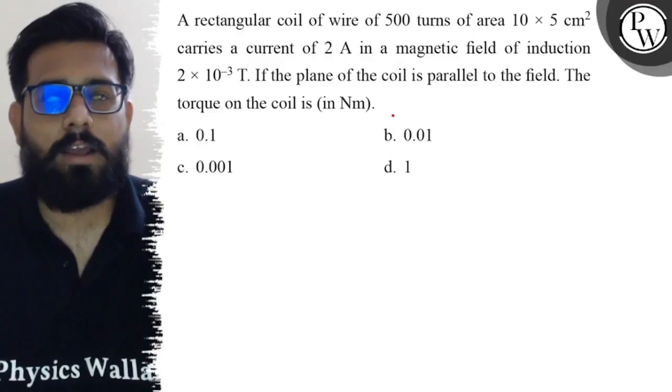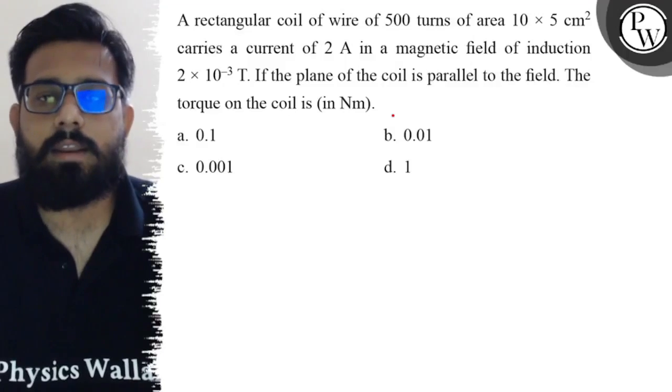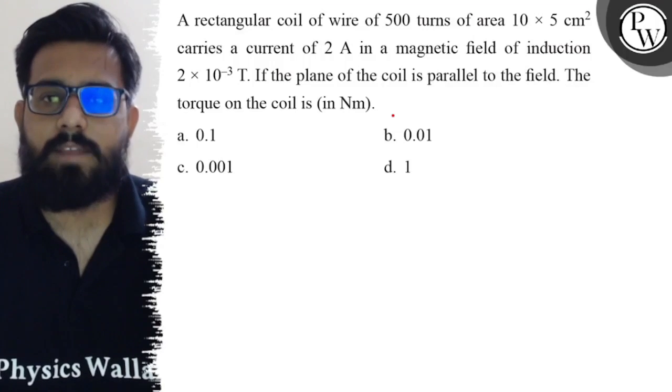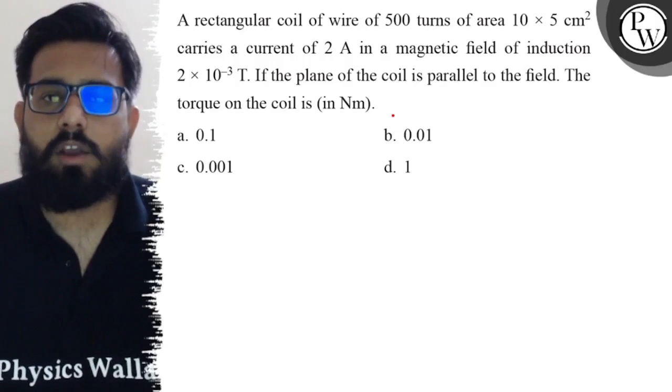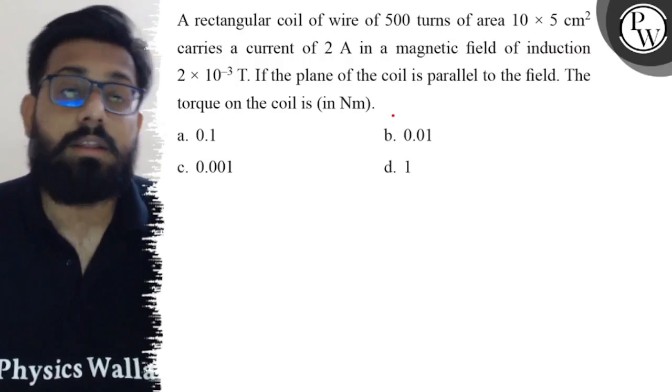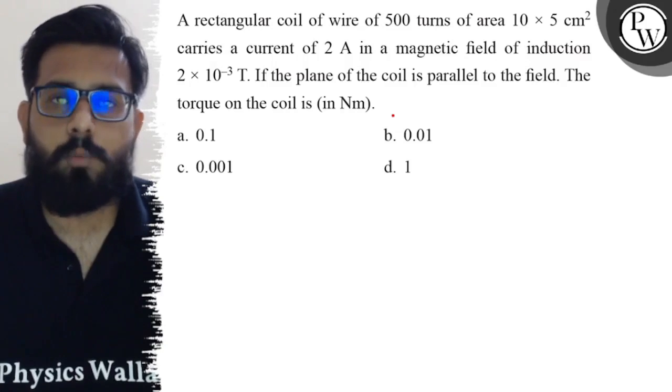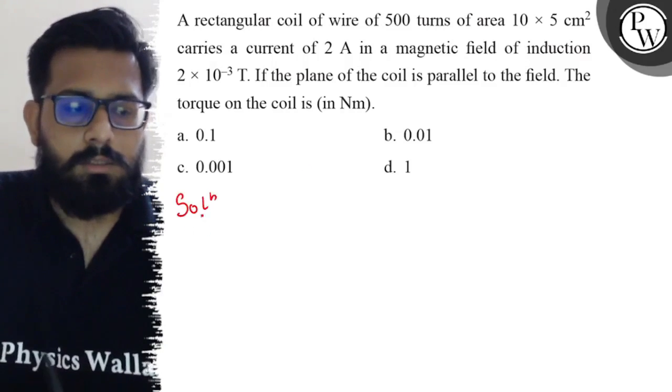Hello, so let's see the question. A rectangular coil of wire of 500 turns of area 10 × 5 cm² carries a current of 2 amperes in a magnetic field of induction 2 × 10⁻³ Tesla. If the plane of the coil is parallel to the field, the torque on the coil is: your first option is 0.1, second option is 0.01, third option is 0.001, and your fourth option is 1.